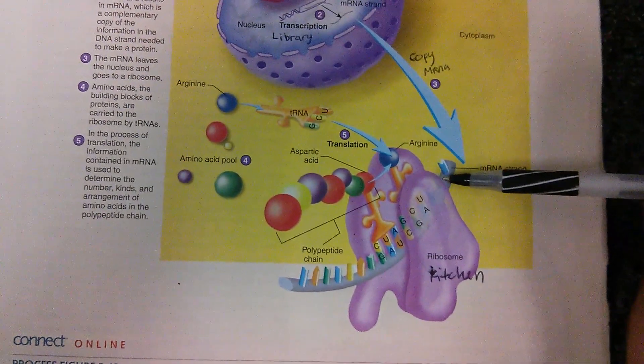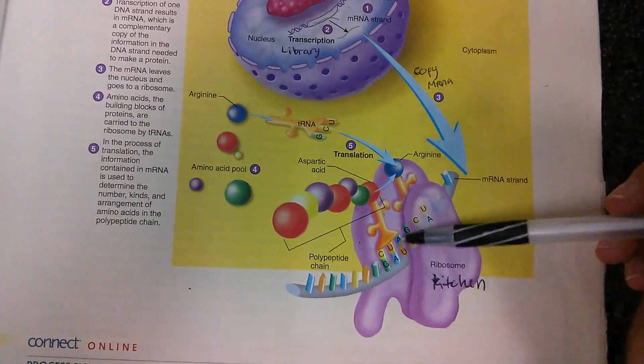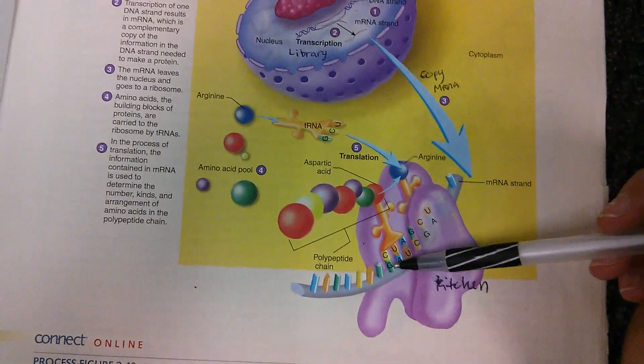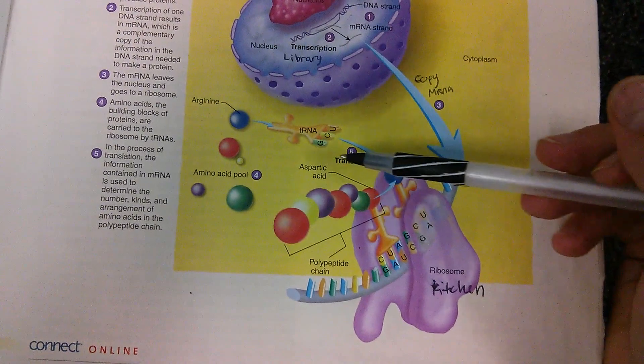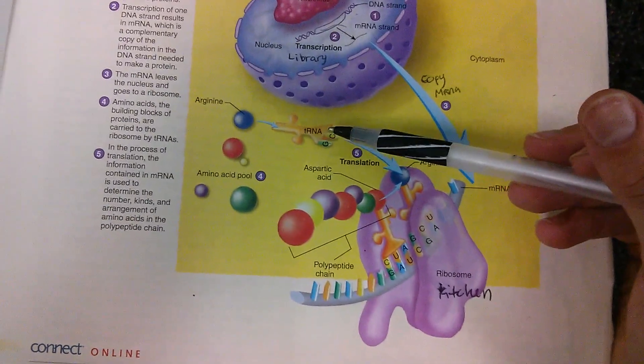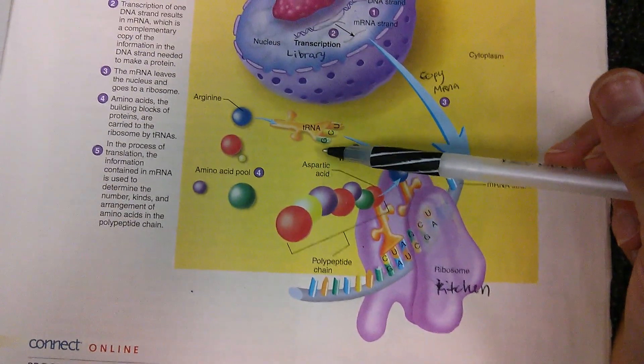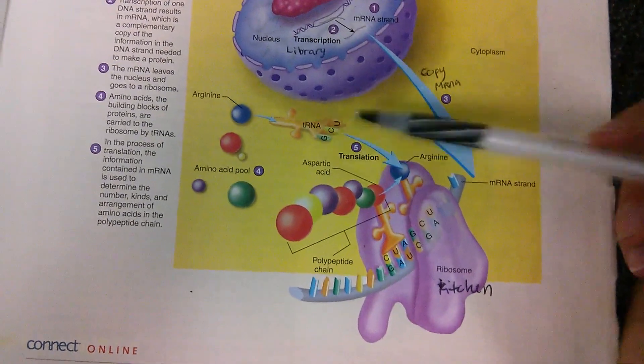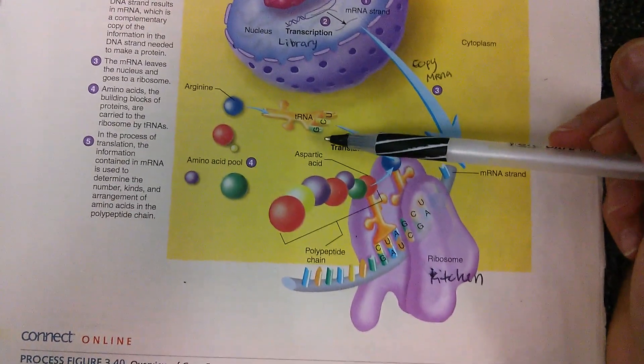So here you have the recipe here, which is the mRNA strand, which is the copy that you made. And now what's going to happen is tRNA, or transfer RNA, is going to have to bring the amino acids that are needed, or the ingredients needed for the cake, to build it.